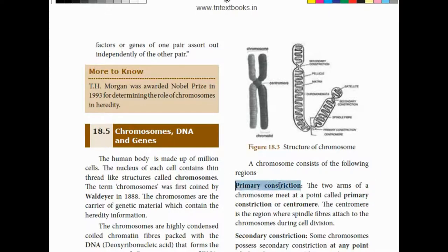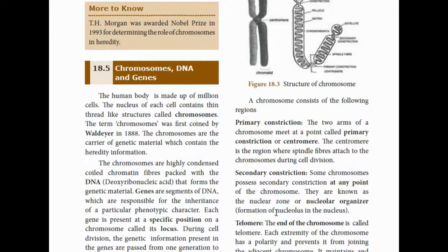In certain regions of the chromosome there are constrictions. The primary constriction is where the centromere is located — it looks like a knot. Each chromosome always appears in pairs of two strands joined at the centromere — that is the primary constriction. The reason for the primary constriction is that during cell division, spindle fibers attach at this location, enabling chromosomes to separate.